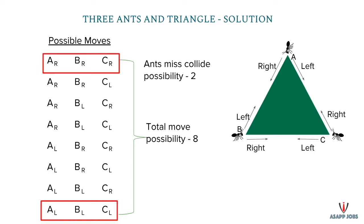There are two possibilities in which the ants will never collide. So the miss probability will be 2 by 8, which is 0.25.